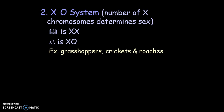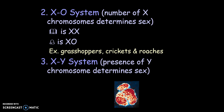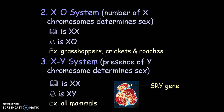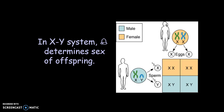The XO system is for grasshoppers, crickets, and cockroaches. The XY system — where the presence of the Y determines the sex — is what mammals have. This Punnett square shows how this determines the sex of the individual. Female is XX, male is XY, and when you cross those, you get a 50-50 chance of having a girl or a boy. It is the male who determines the sex of the individual.